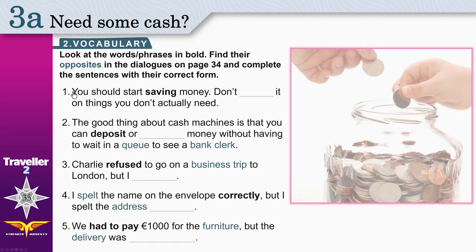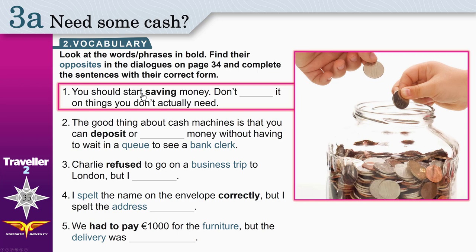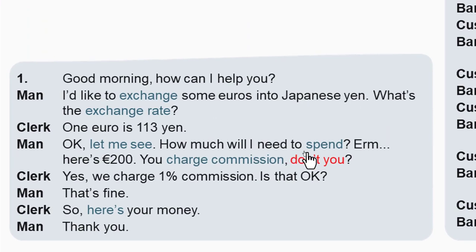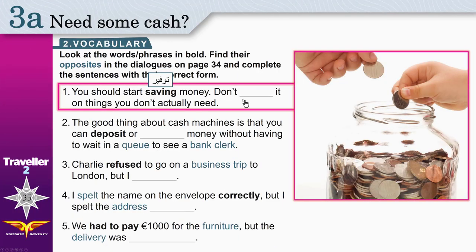One. You should start saving money. When you save money, you keep money in a safe place to use it later. Don't use the opposite of saving money. Go to the dialogues on page 34 and find the opposite of save — and that is spend. When you spend money, you give it. When you save money, you keep it. Don't spend it on things you don't actually need.